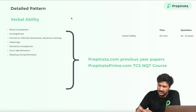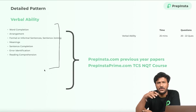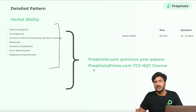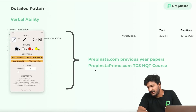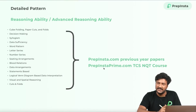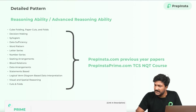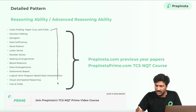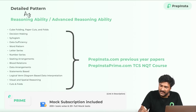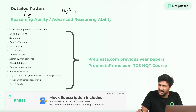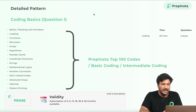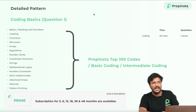For Verbal Ability, you can take a screenshot of the syllabus shown. For Reasoning Ability and Advanced Reasoning, the syllabus more or less remains the same for both — it's just that the foundational Reasoning section is average difficulty while Advanced Reasoning is very high difficulty. All previous year papers are again available on PrepInsta.